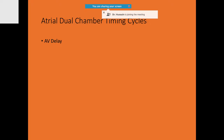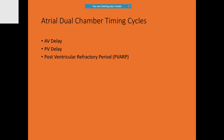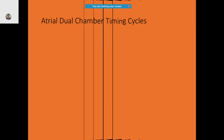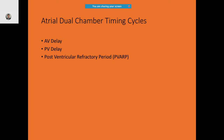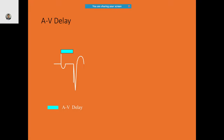Timing cycles include AV delay, PV delay, and PVARP — the post-ventricular atrial refractory period. These delays are important: starting from the beginning of the paced P wave, the time measured to the start of the QRS is the AV delay.